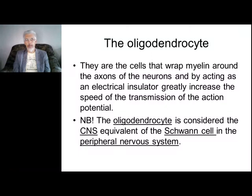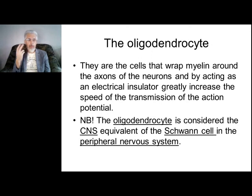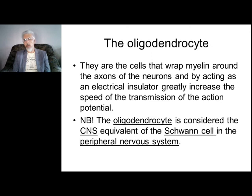The next type of glial cells is oligodendrocytes. These cells wrap myelin around the axon. Myelin is very important because it influences the conduction of signals. In the peripheral nervous system, cells with the same function are called Schwann cells.